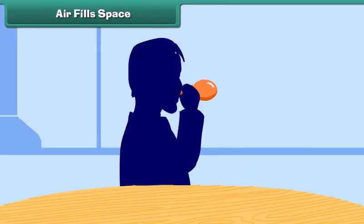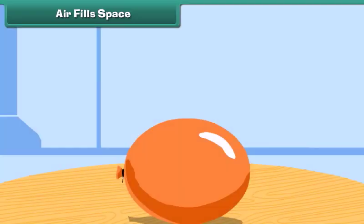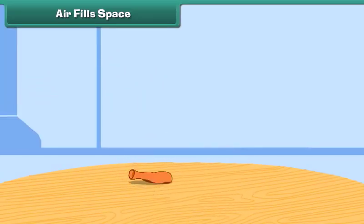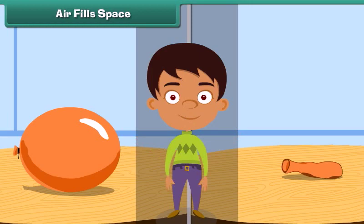Air fills space. Take a balloon and blow air into it — the balloon expands in size. Now prick the balloon with a pin. The air inside the balloon escapes through the hole and the balloon becomes flat. This proves that air fills space.